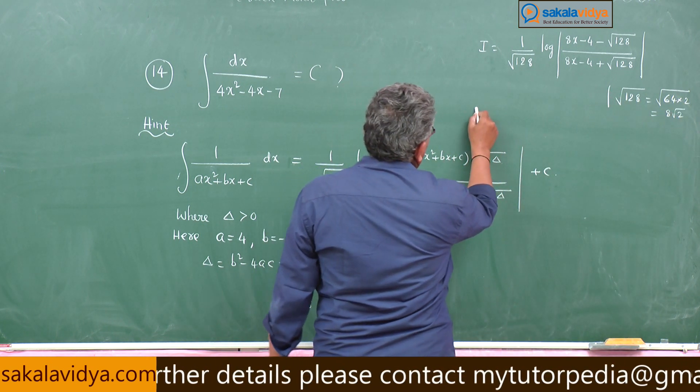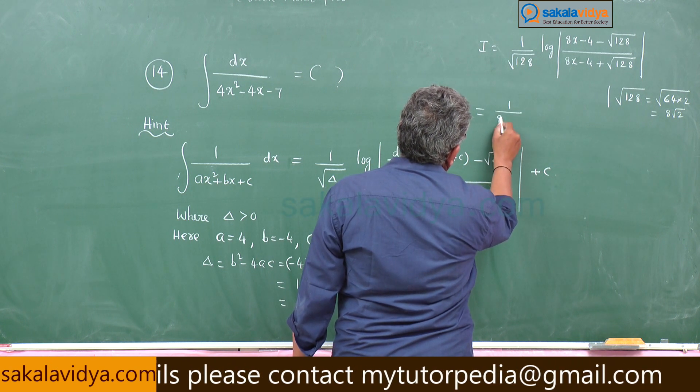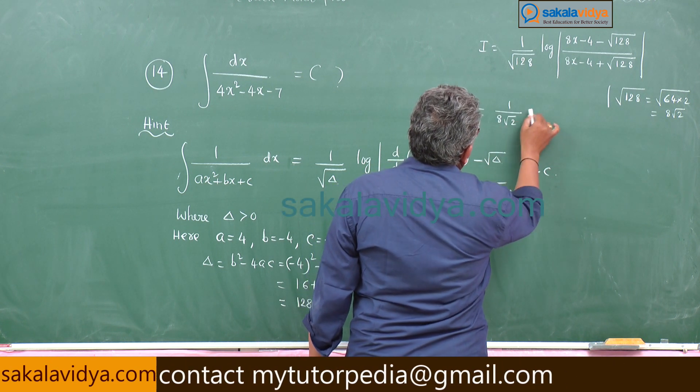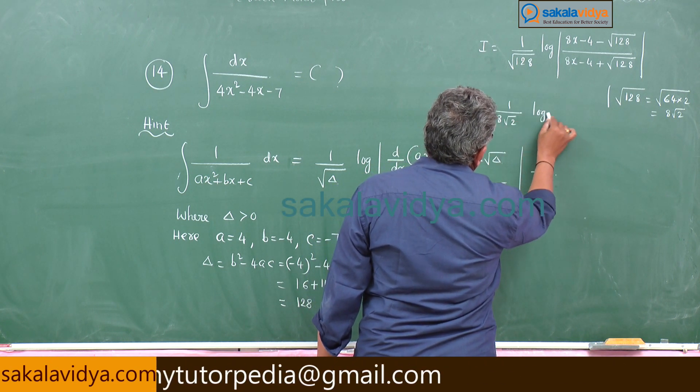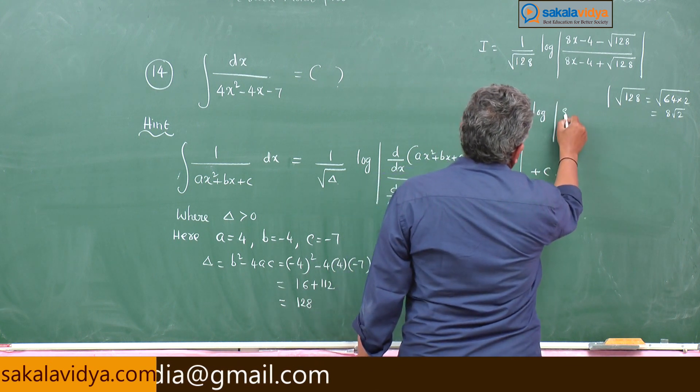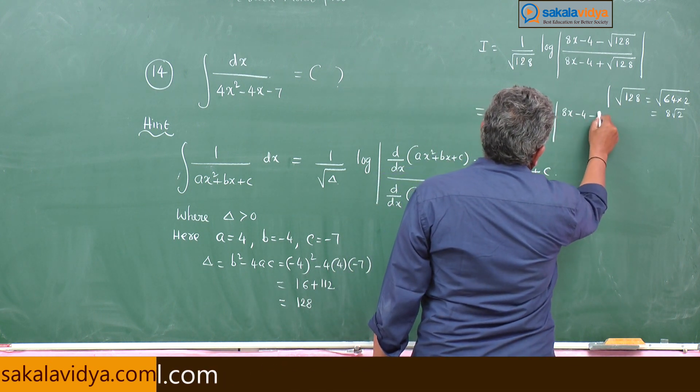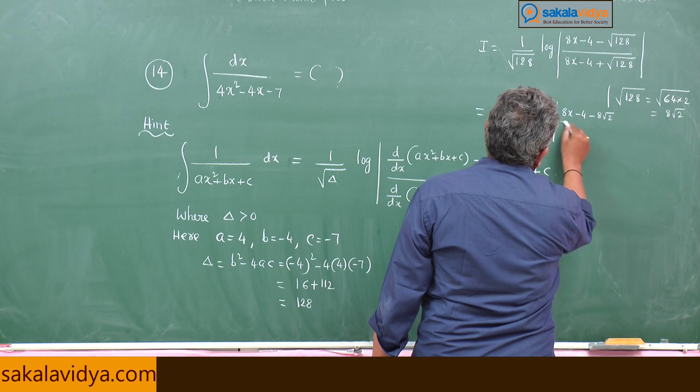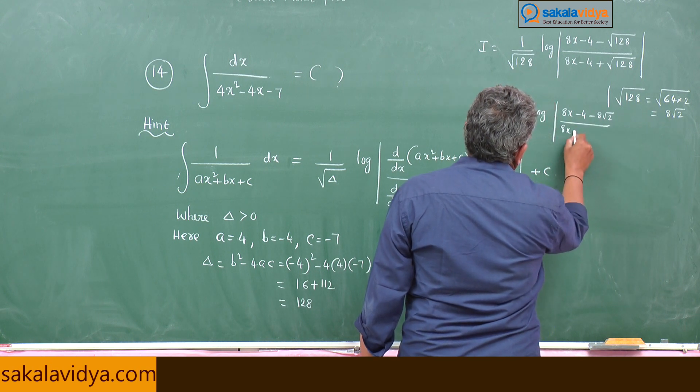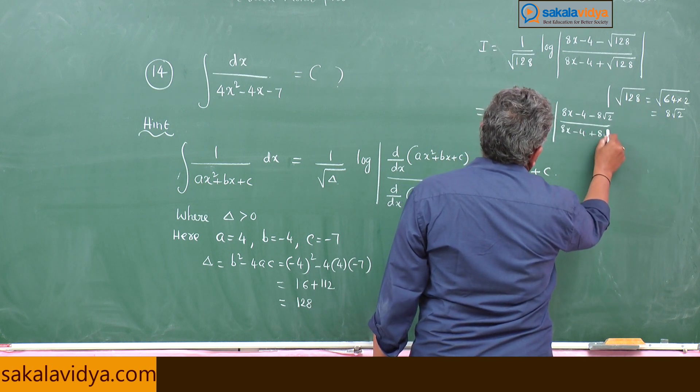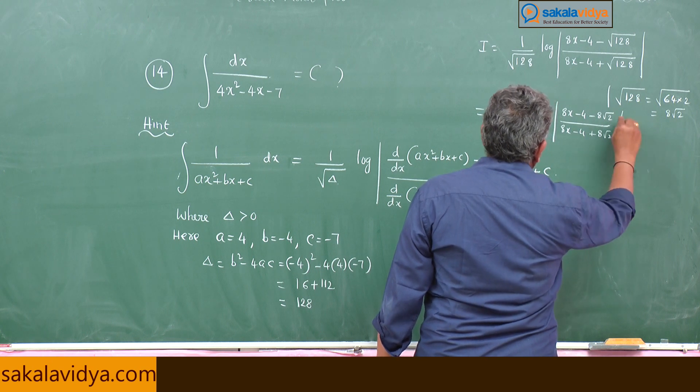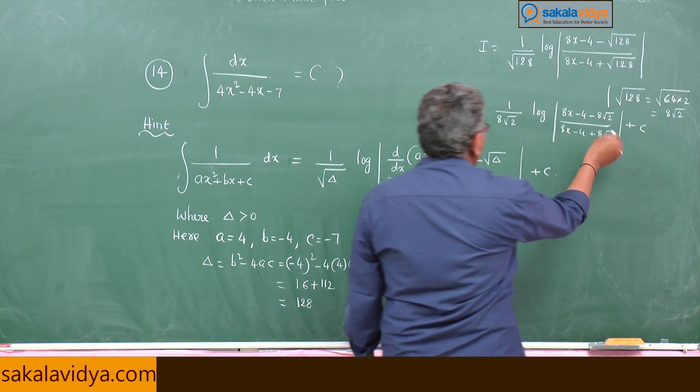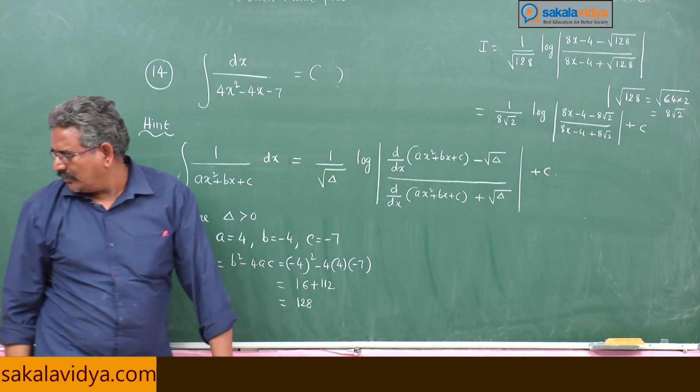So this will be 1 by 8 root 2 log mod 8 x minus 4 minus 8 root 2 by 8 x minus 4 plus 8 root 2 plus c. See, further also you can simplify taking 4 common and 4 common.